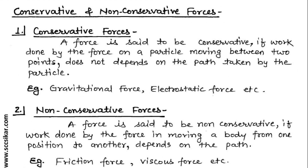There are two types of forces: conservative and non-conservative. Conservative forces are those where the work done on a particle moving between two points does not depend on the path taken — it depends only on the initial and final positions. For example, gravitational force depends only on position, not the path. Non-conservative forces are those where work done depends on the path. For example, friction always depends on the path and the nature of the surface.